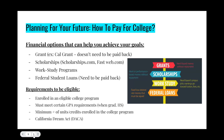Planning for your future and how to pay for college — there are many financial aid options, such as grants and Cal Grants that do not need to be paid back, scholarships through sites like Scholarship.com and Fastweb.com, work-study programs, and federal student loans which do need to be paid back with interest. Requirements to be eligible include being enrolled in an eligible college program, meeting certain GPA requirements, a minimum number of units or credits, and the California Dream Act.